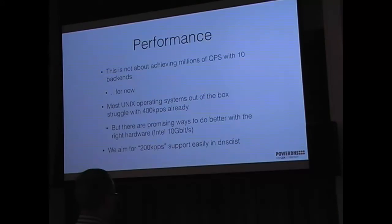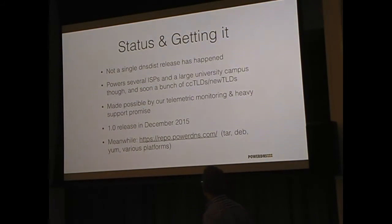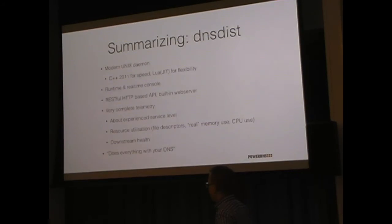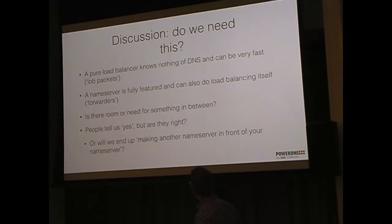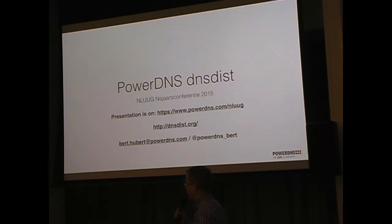On performance I'll skip that for now — it's good. Status: we haven't officially released this yet, but we have five active deployments in 24/7 operation. In December we'll be releasing version 1.0. Meanwhile you can find it on repo.powerdns.com where we have tarballs, Debian, and YUM packages for various platforms. For the discussion: do we actually need this? You can meet me over drinks and tell me it's all wrong — or right. Any questions?